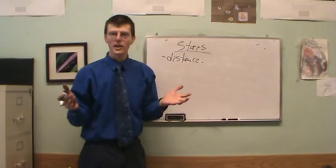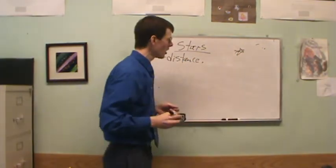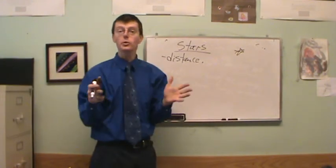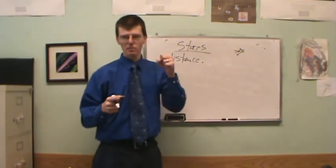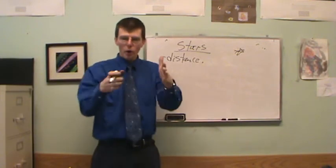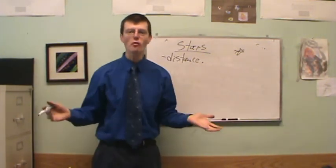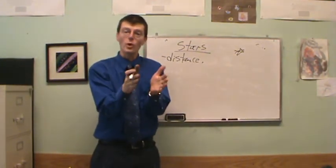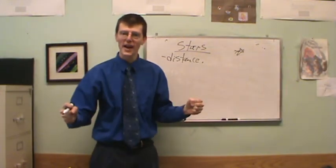How does triangulation work? I have a star and I need to measure the angle to it from two different perspectives. I could measure from one side of the earth — say, from America — and call a friend in Europe and we both point our telescopes at the star. But the stars are so fantastically far away that we would measure basically the same angle; we wouldn't be able to see any difference. So we need our observers farther apart than that.